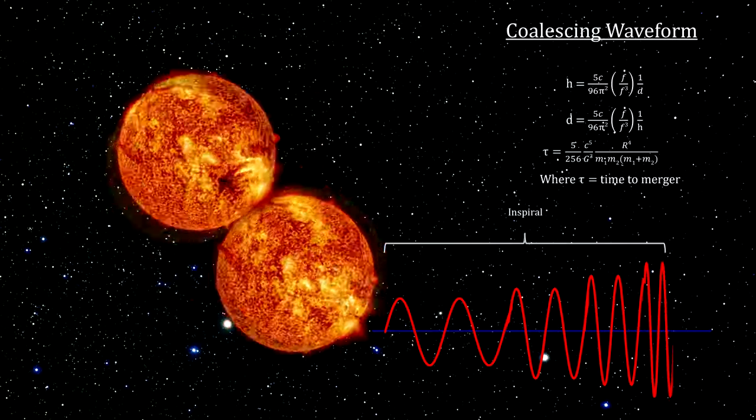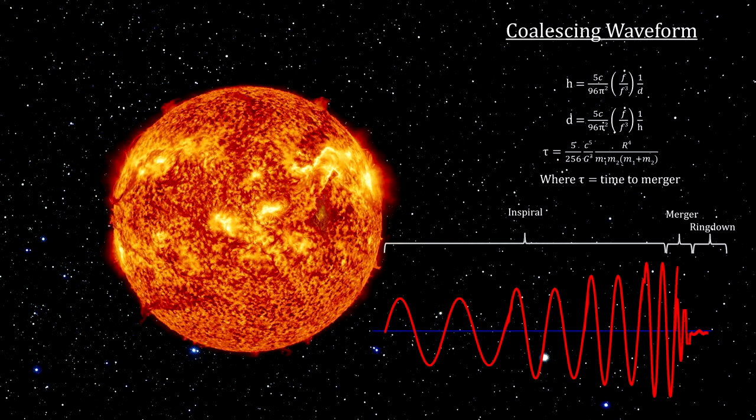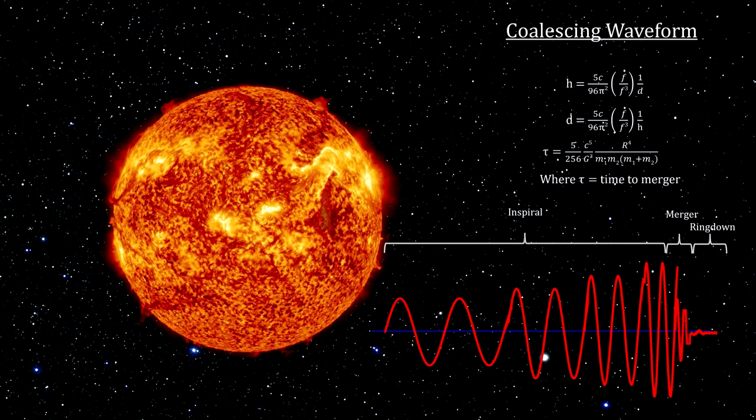The in-spiral, the merger, and the ring down to an object that is no longer asymmetric, and therefore no longer radiating gravitational waves.